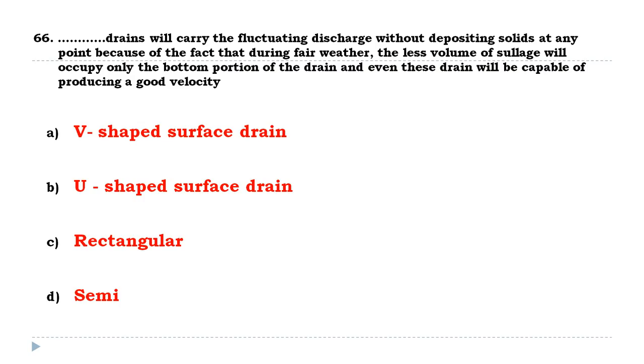V-shaped surface drains will carry the fluctuating discharge without depositing solid at any point because during fair weather, the less volume of sullage will occupy only the bottom portion of the drain and even these drains will be capable of producing a good velocity.